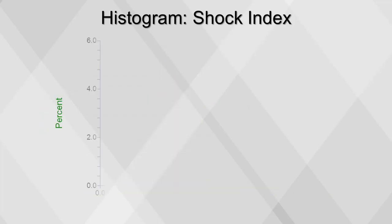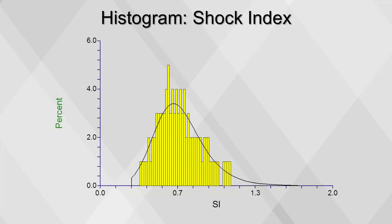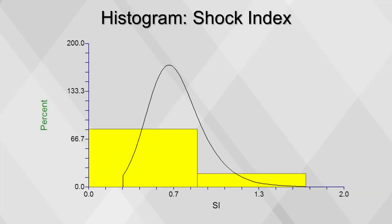There's no single rule of thumb for choosing bin sizes. The bin sizes you choose will depend on the research question you're asking. Here, using 100 bins shows too much detail and it's not useful. Likewise, too few bins tells us little about the underlying shape of the distribution. This example uses two bins and provides too little detail.